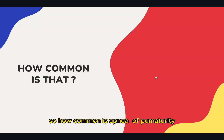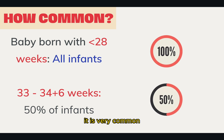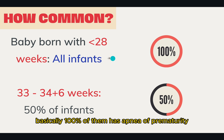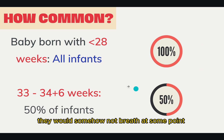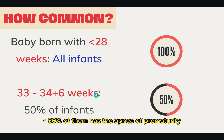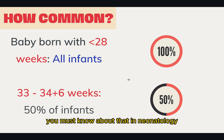So how common is apnea of prematurity? It is very common. The baby born with gestational age less than 28 weeks — basically 100% of them have apnea of prematurity; they were somehow not breathing at some point. For the baby with gestational age of 33 to 34 plus 6 weeks, around 50% of them have apnea of prematurity. So it is a very common disease you must know about in neonatology.